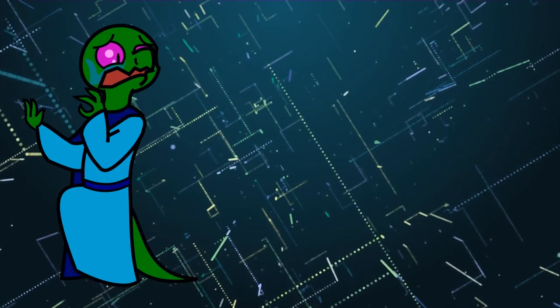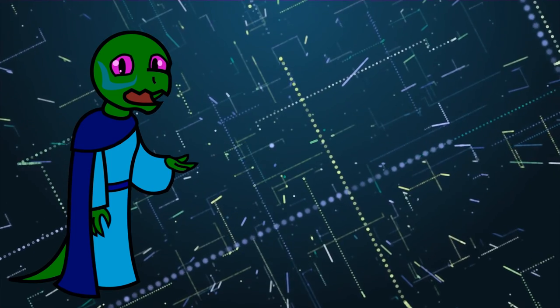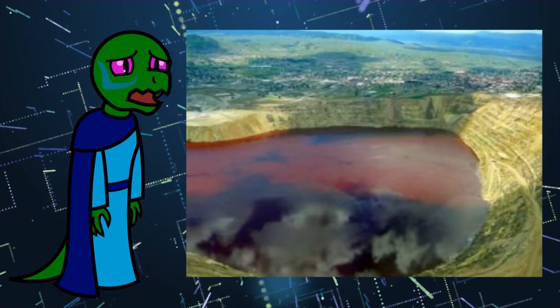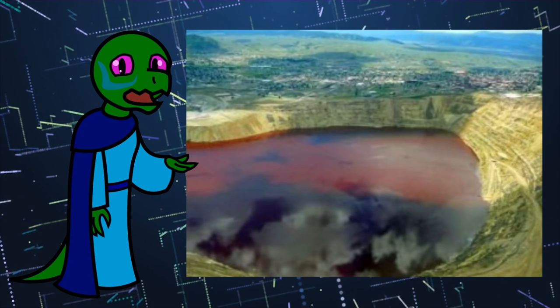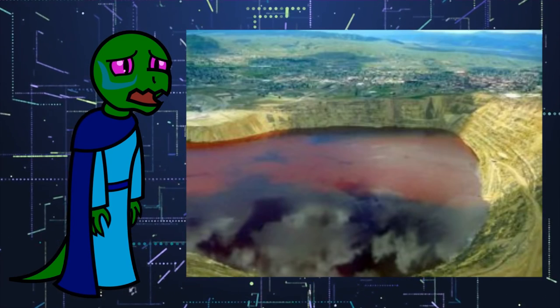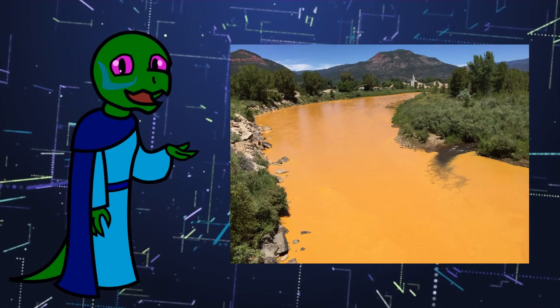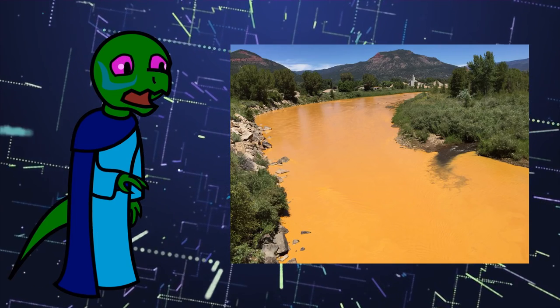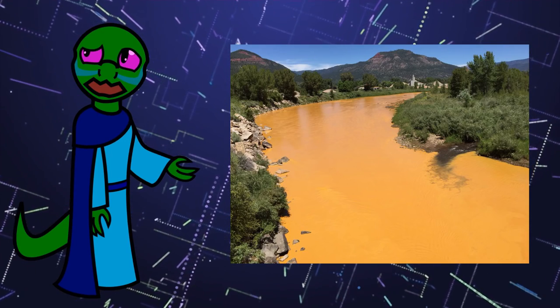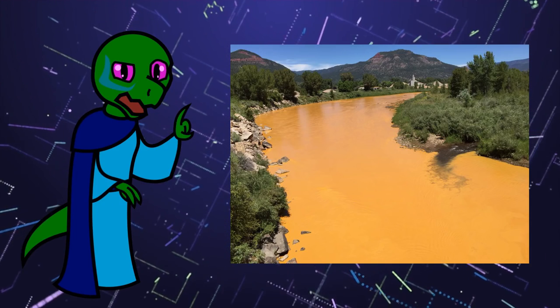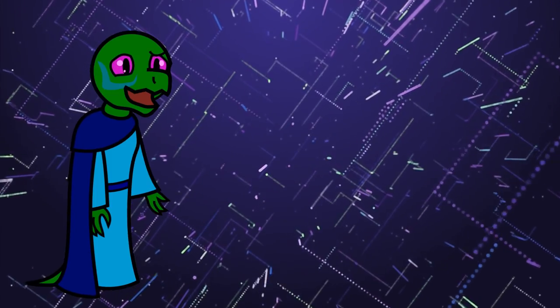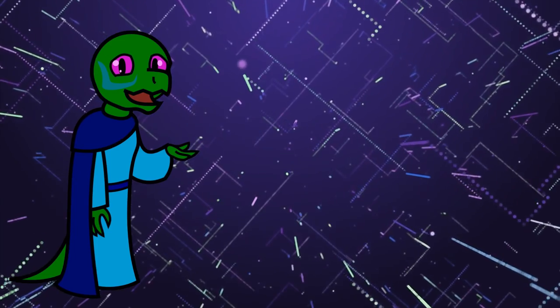Anyways, authoritarian regimes have absolutely atrocious track records of environmental protection. Lake Karachay was so polluted by the Soviet Union, simply standing on the shore for an hour would give a person a lethal dose of radiation. You could look to a more democratic government, but even then, you have disasters like the Environmental Protection Agency of the U.S. government accidentally dumping millions of gallons of toxic contaminants into the Animas River, turning it toxic and bright orange. Who gets compensated when the government pollutes? Certainly not the taxpayers, and the government gets tax money whether or not they screw up, so they have no incentive whatsoever to curb their incompetence, let alone pollution.